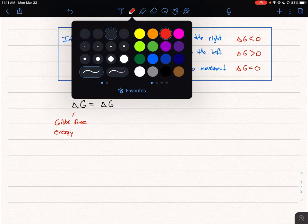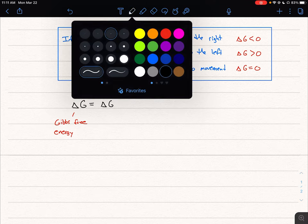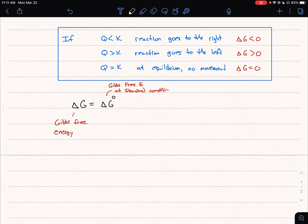And what we're seeing is we're developing an equation that will allow us to compare delta G under any conditions to those of standard conditions. So it's delta G not plus RT ln of Q.